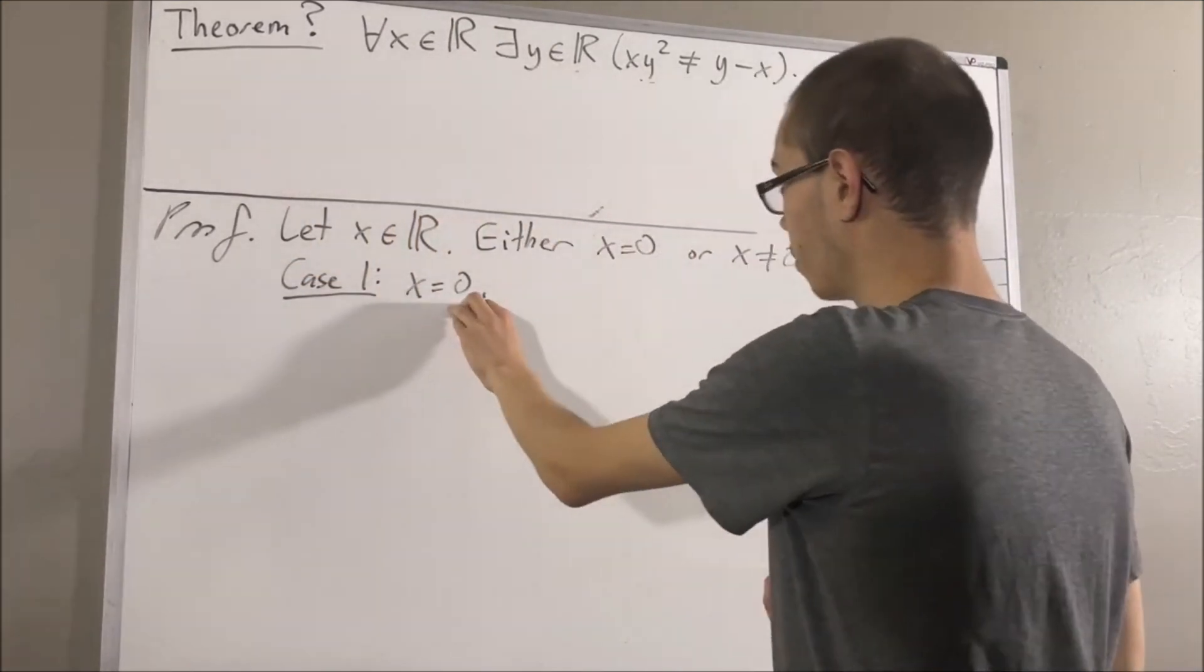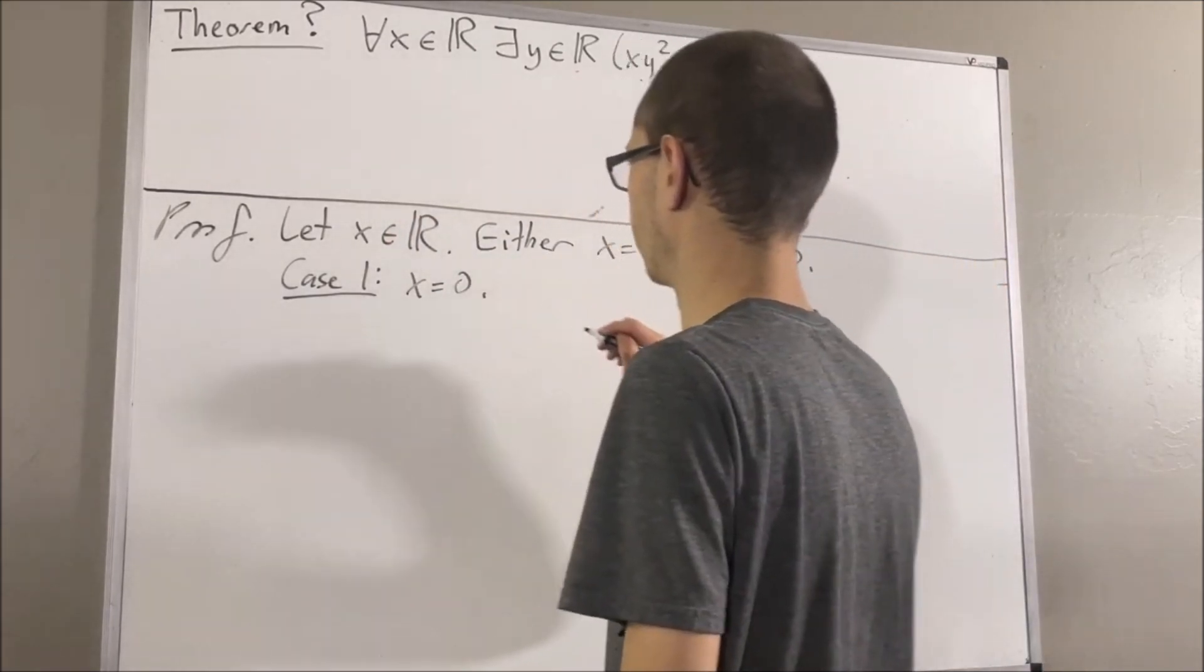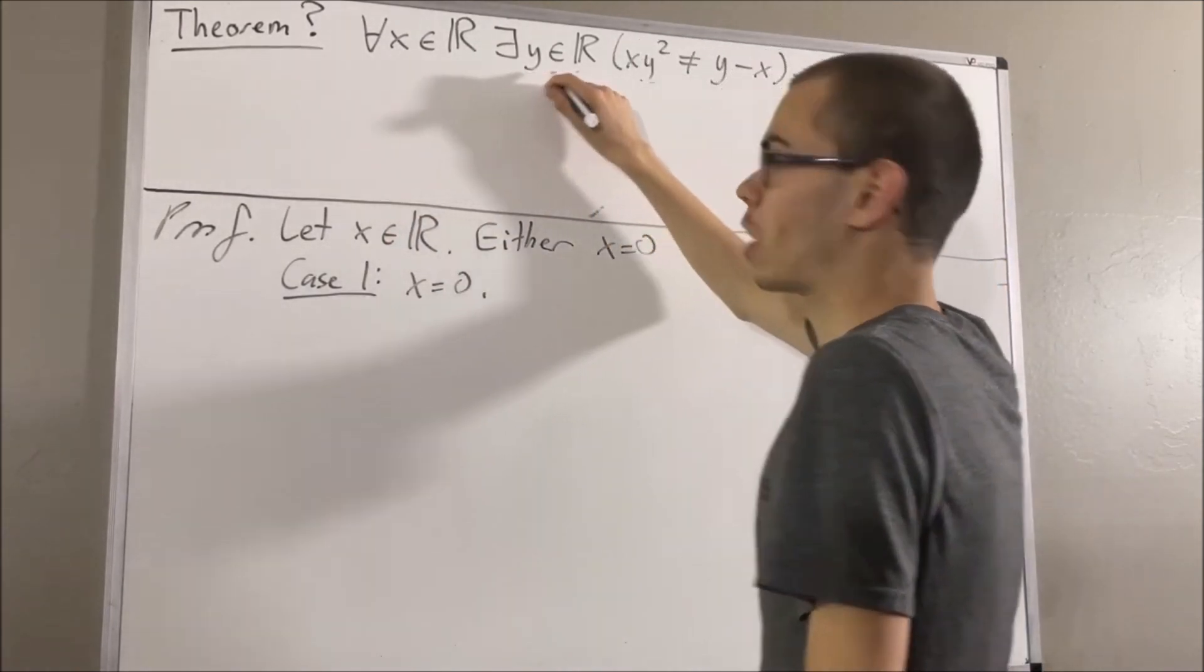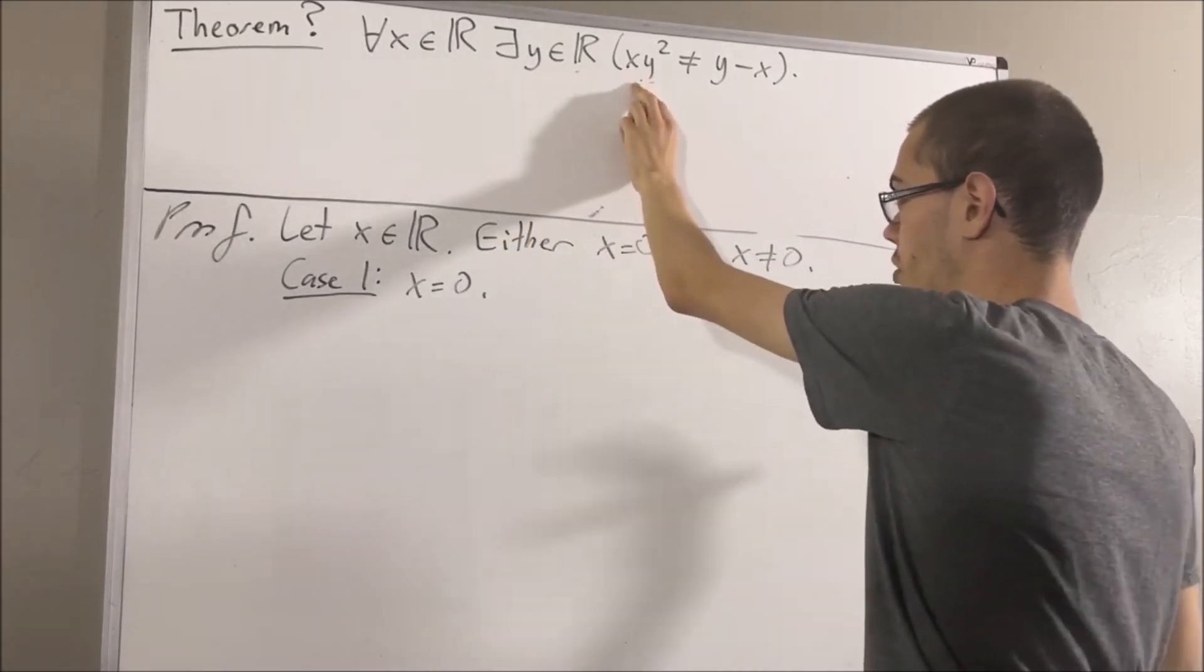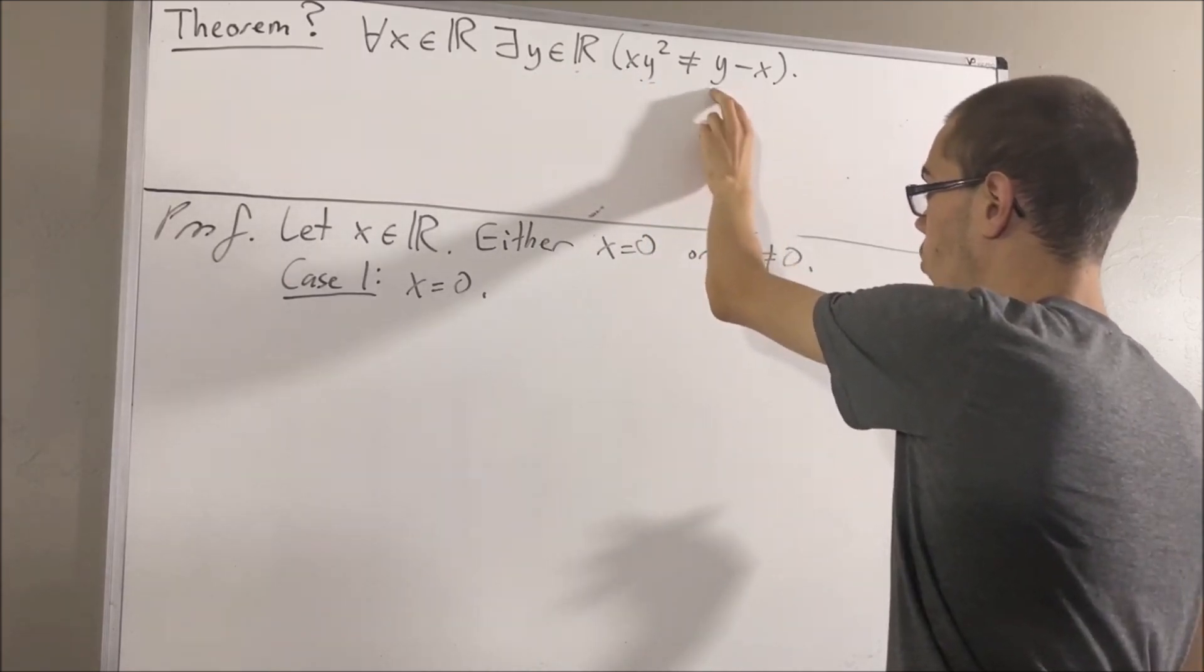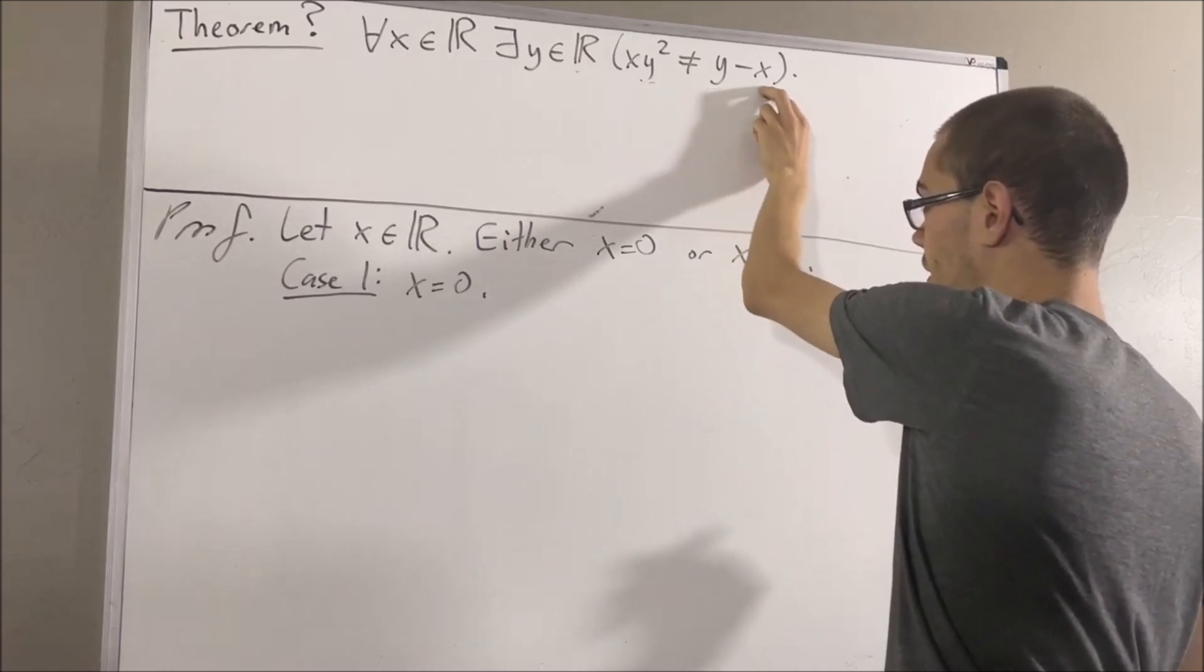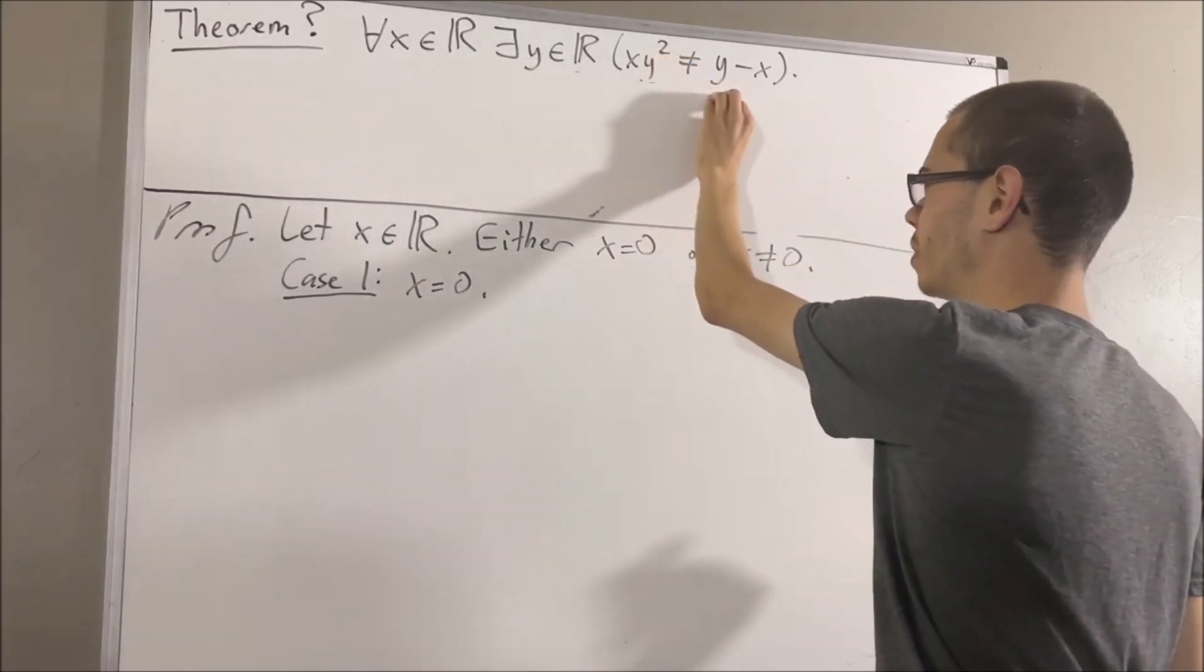In the case where x is equal to zero, the left-hand side is zero. Wait, we should, we have to take y to be something. Sorry about that. Well, what's the left-hand side going to be? The left-hand side is going to be zero no matter what. The right-hand side, well, we're going to want y to be something which makes this not equal to zero. So let's just choose y to be one.